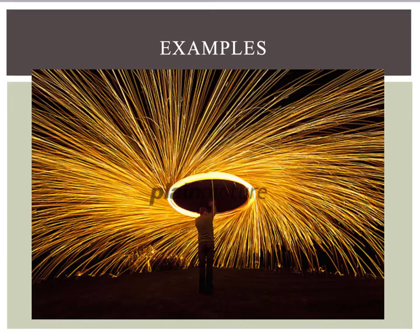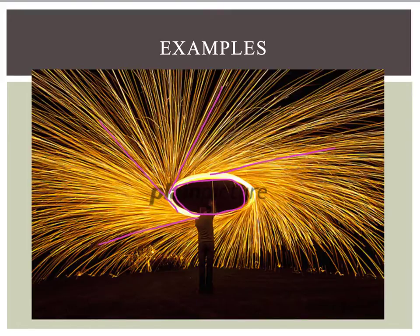Here are some fun pictures. Somebody took a photograph of steel wool that they're burning and spinning in a circular path. As the sparks fly off, you can see they're going in straight lines tangent to the direction of motion, depending on where each spark is in the circle. This is a great example of how tangential velocity applies when things fly off and no longer have that centripetal force.